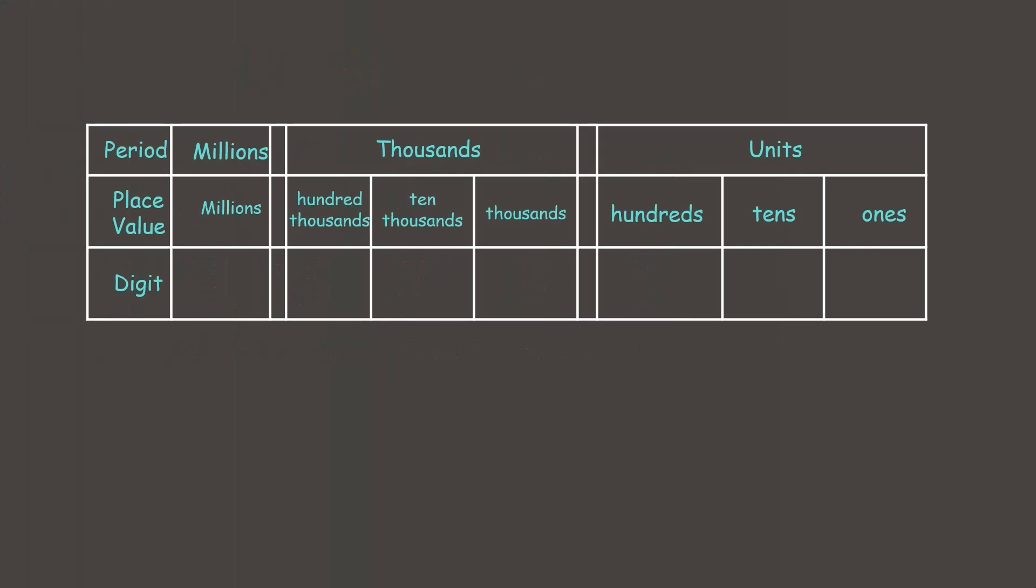We'll use our place value chart to help us. First we have this number. Let's place each digit in the correct place. Now let's read. We have here 3 in the thousands period, so that's 3 thousand, and in the units we have 180. So we can read this as 3,180.